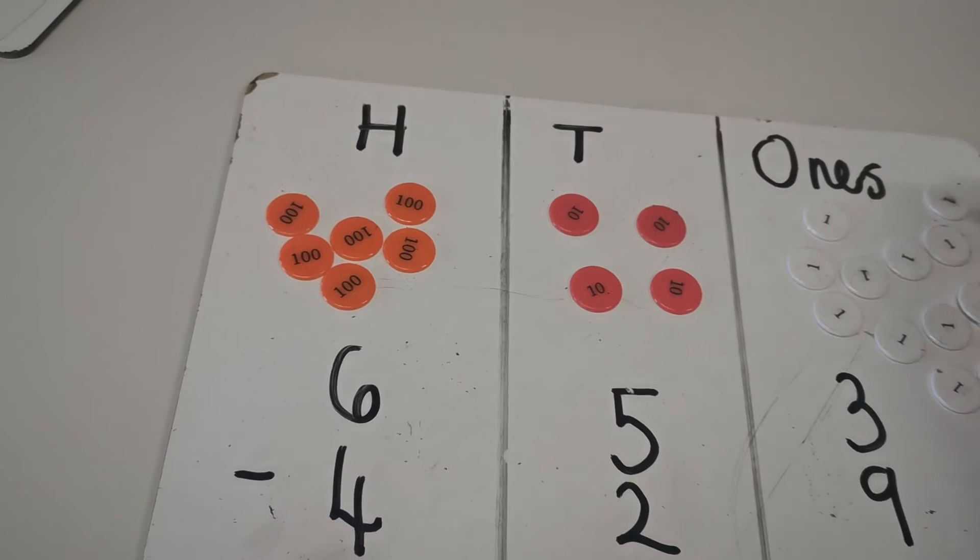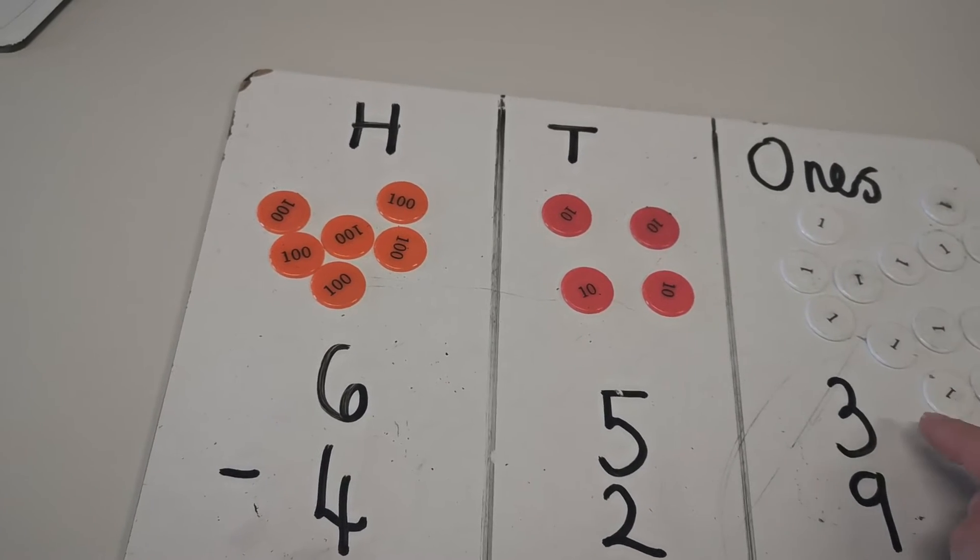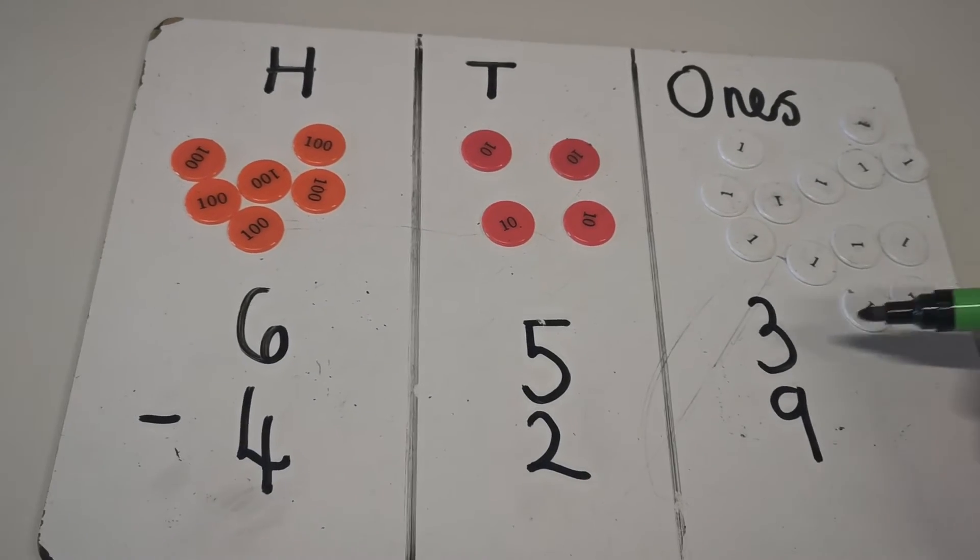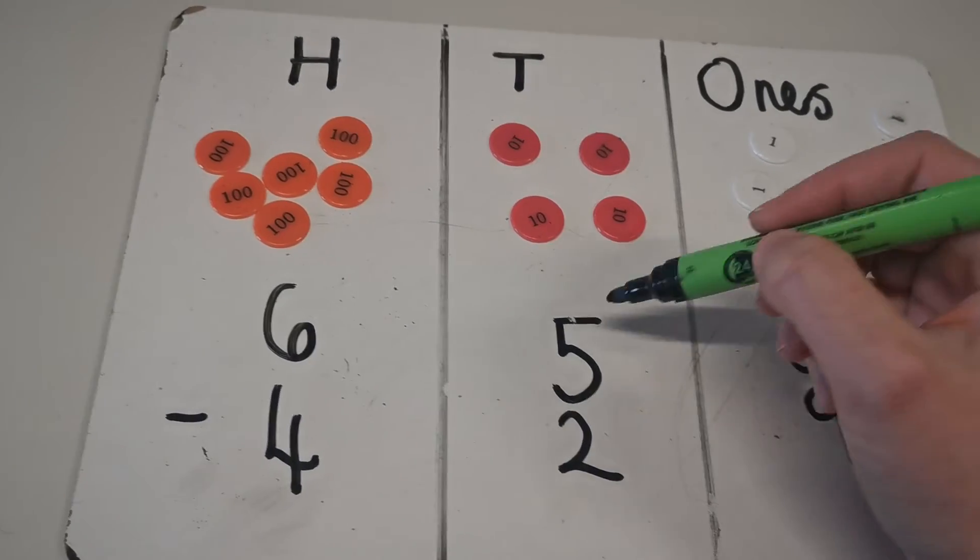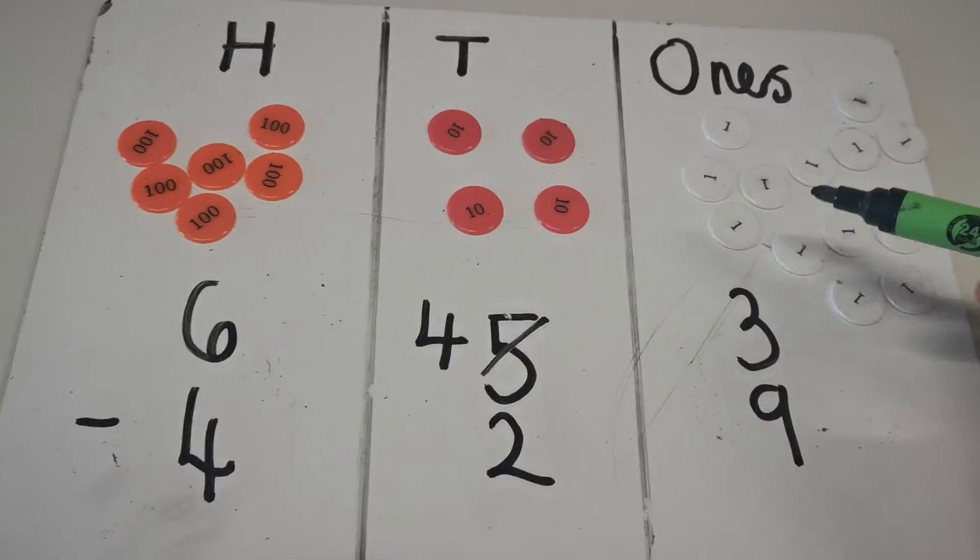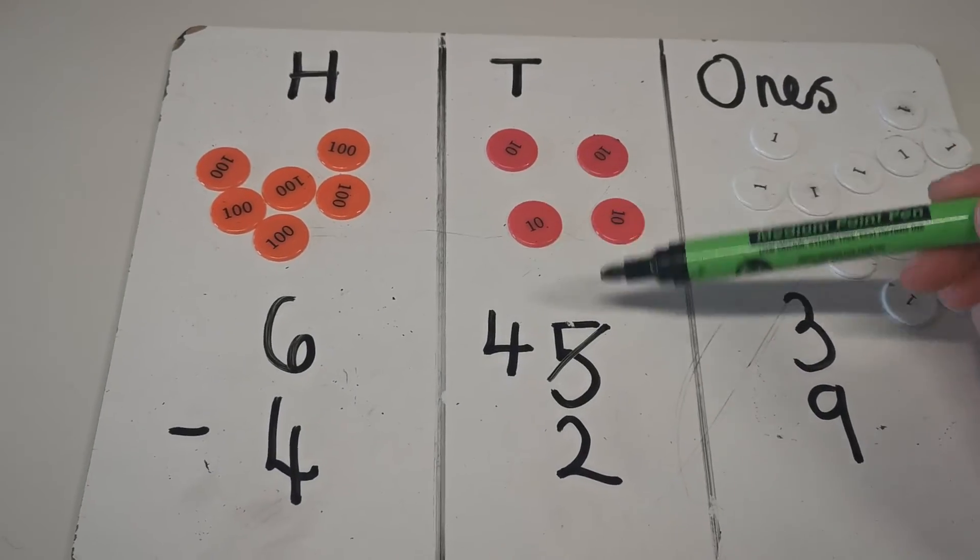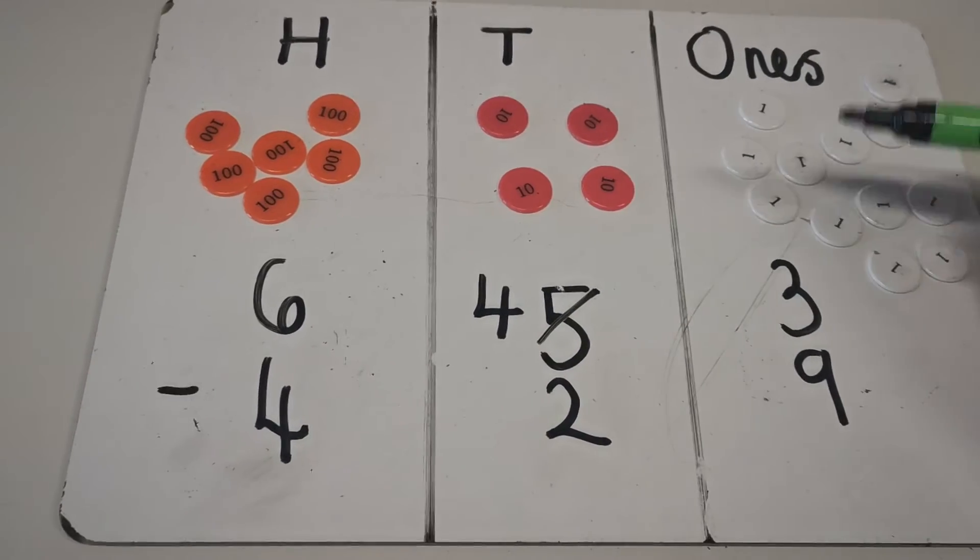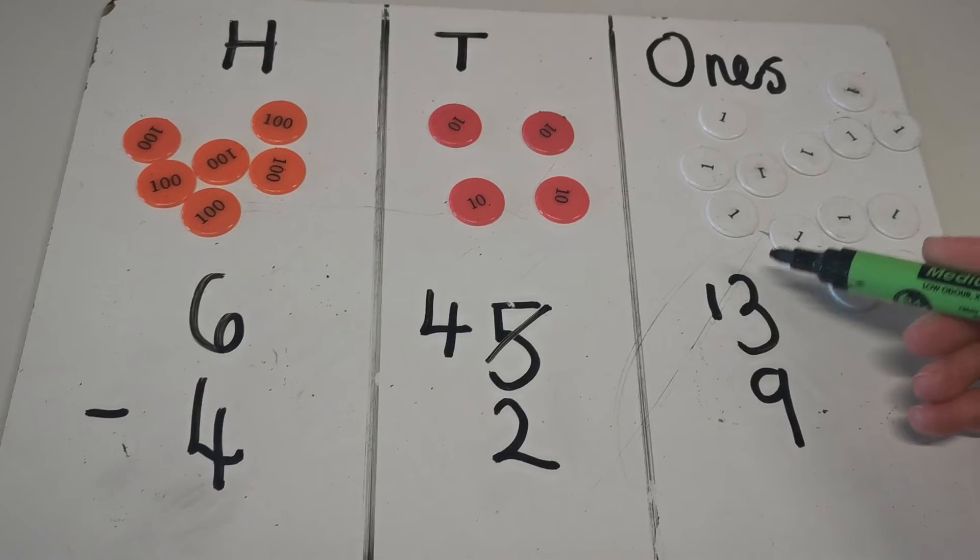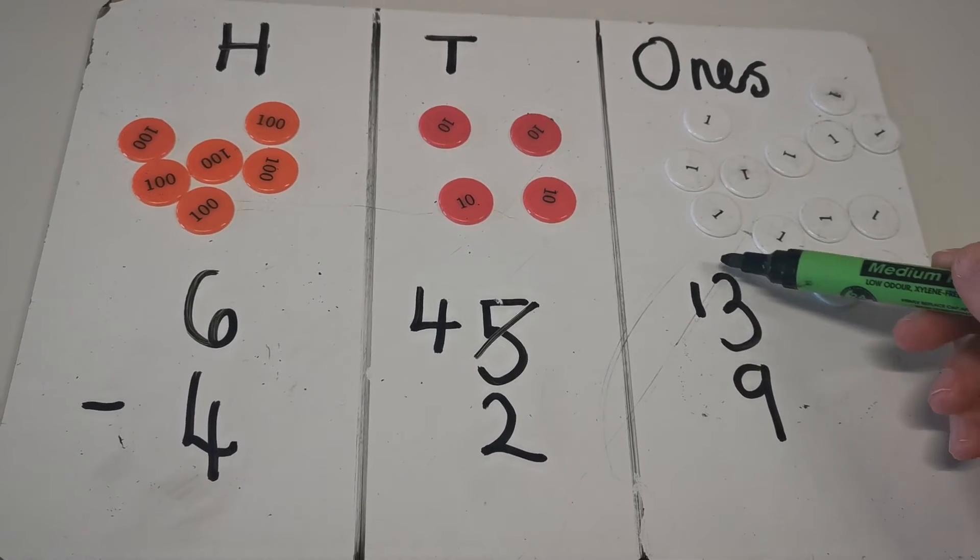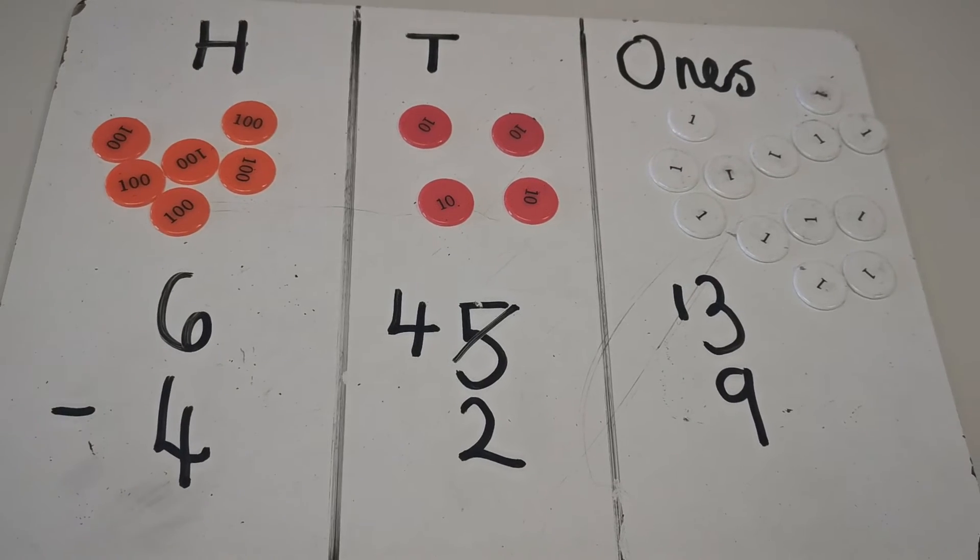So as you can see now, I had 3 ones but I've added another 10 to this, so now I've got 13 ones and I can subtract my 9. What I'm going to do is cross out the 5 because I've now got 4 tens. I've had to regroup and exchange my 1 ten for 10 ones. And then I'm going to put a 1 here to say I have 1 ten and 3 ones, so I now have 13 ones altogether.